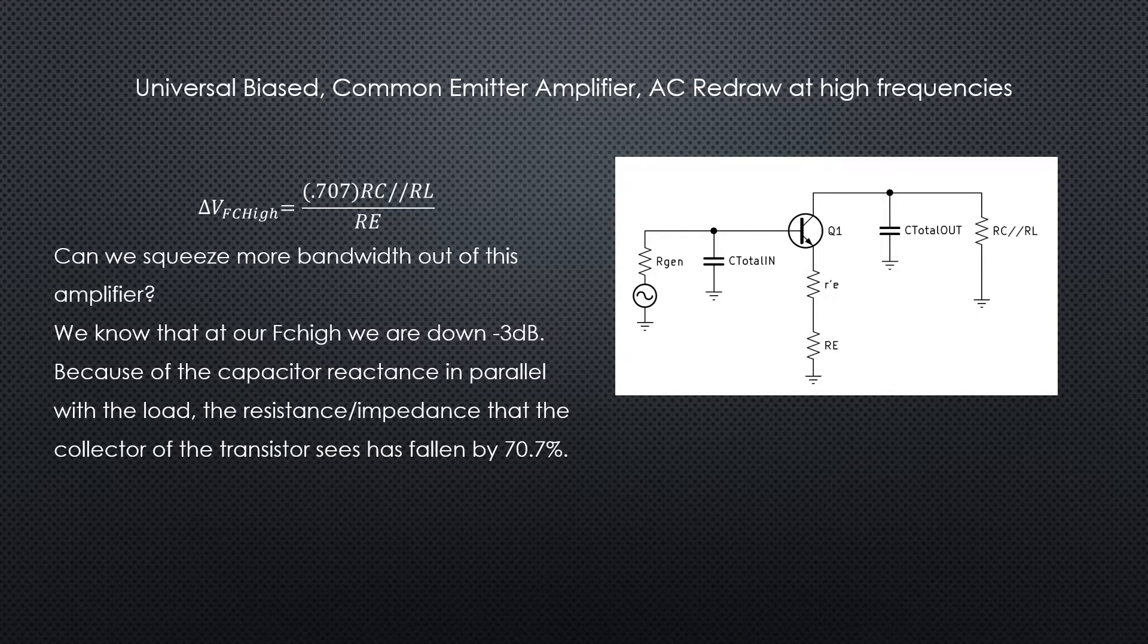So we know that at fc high our delta V is down by 0.707, or we're at 70.7 percent. We're also at the minus three dB mark.